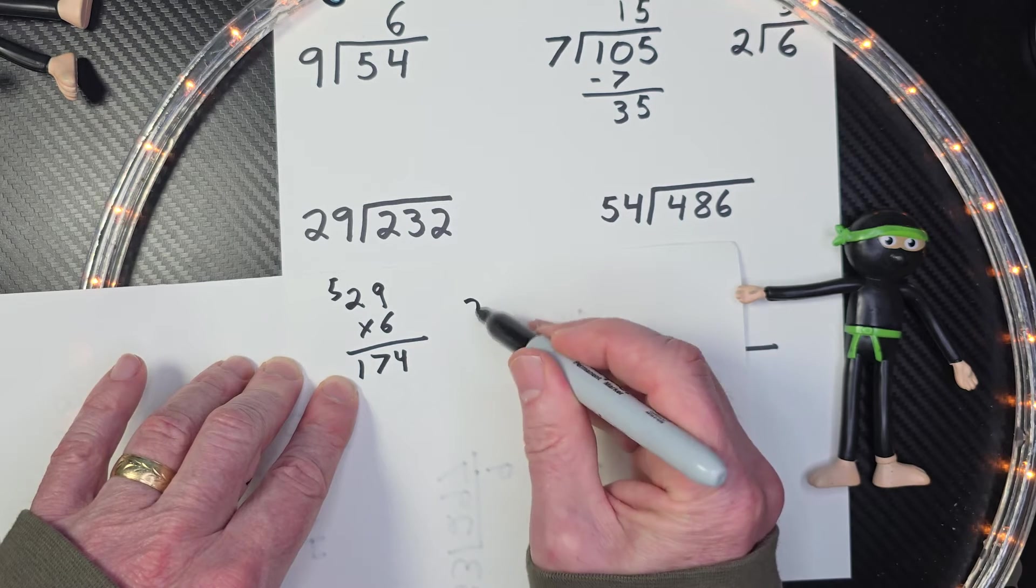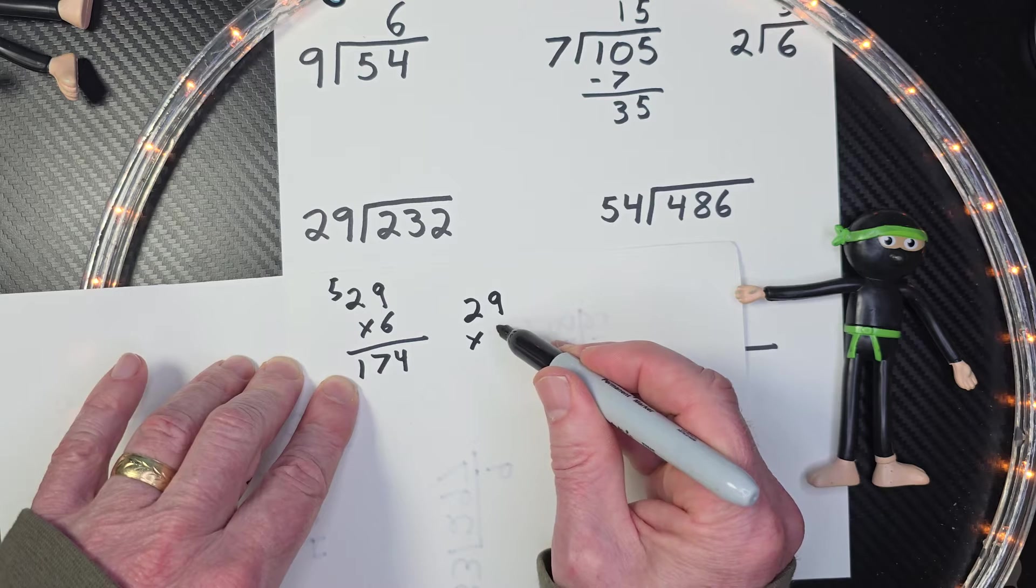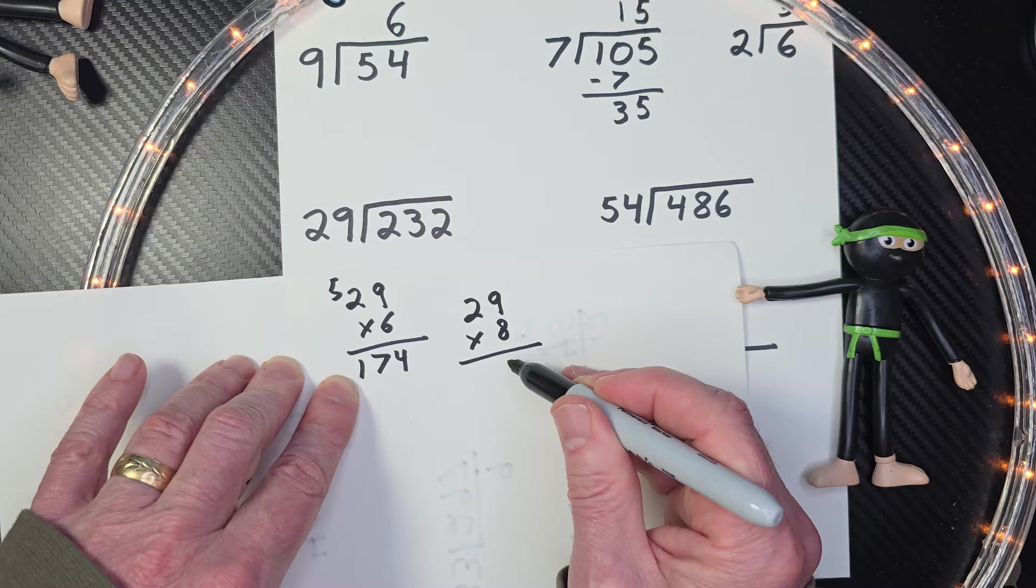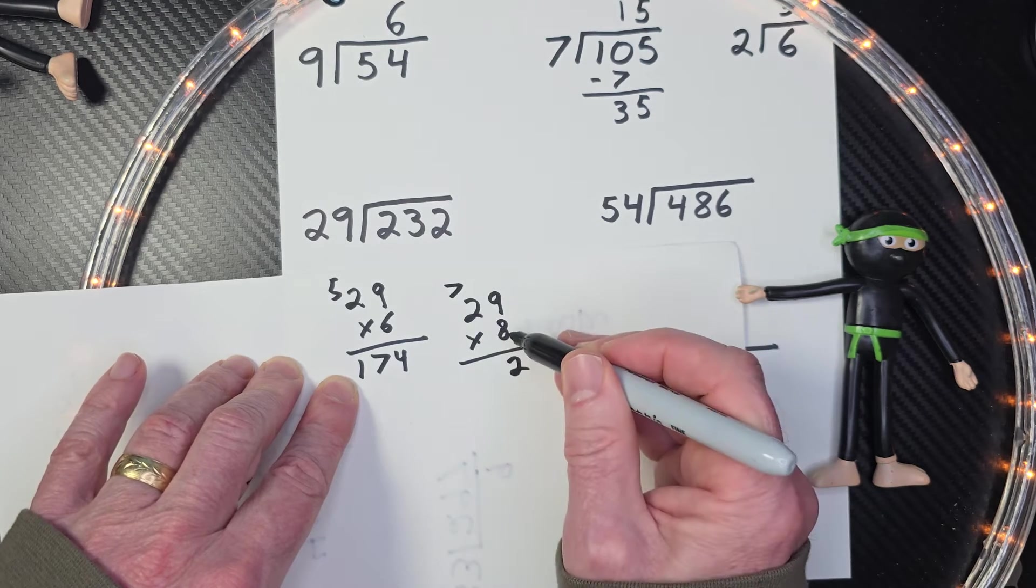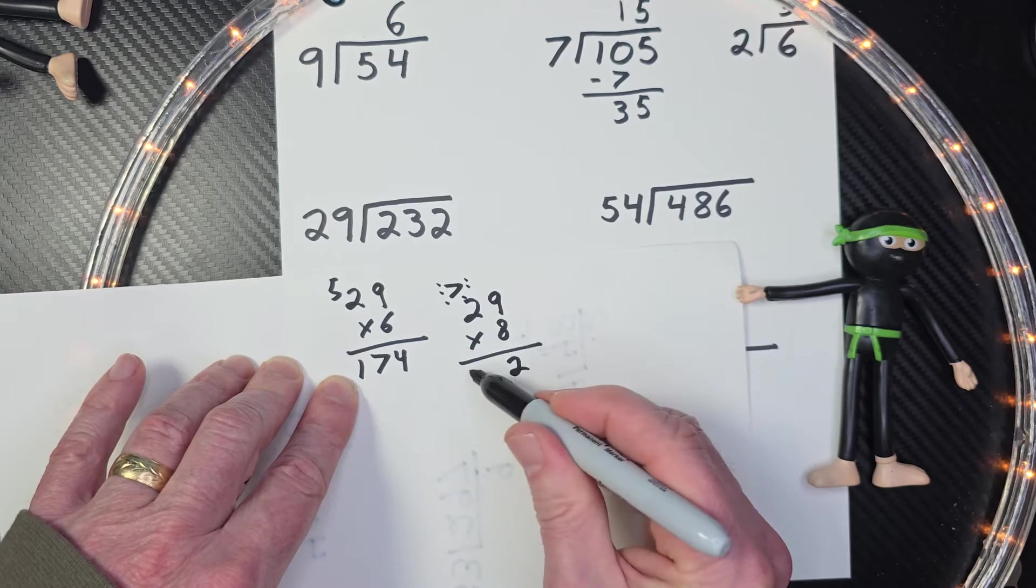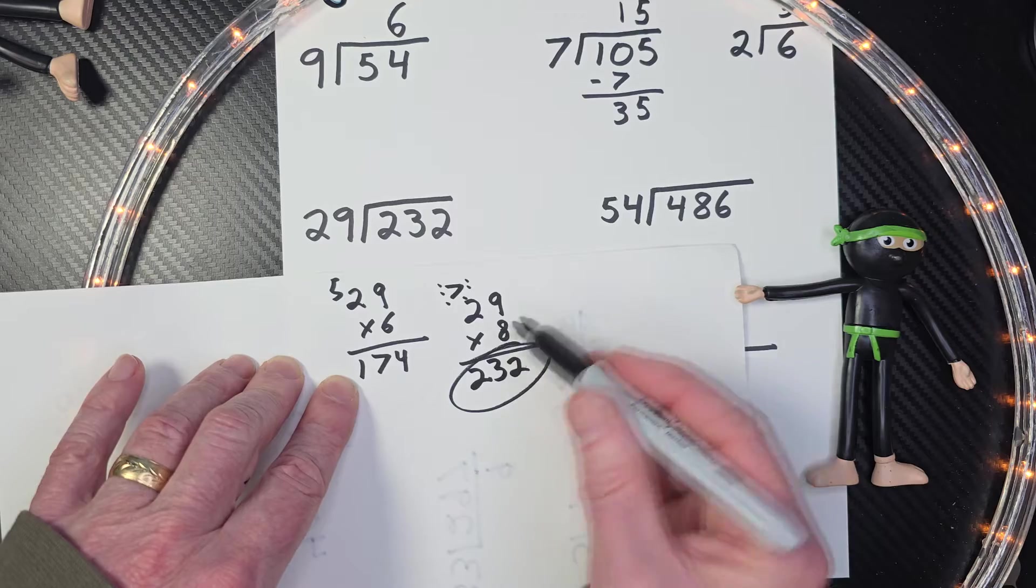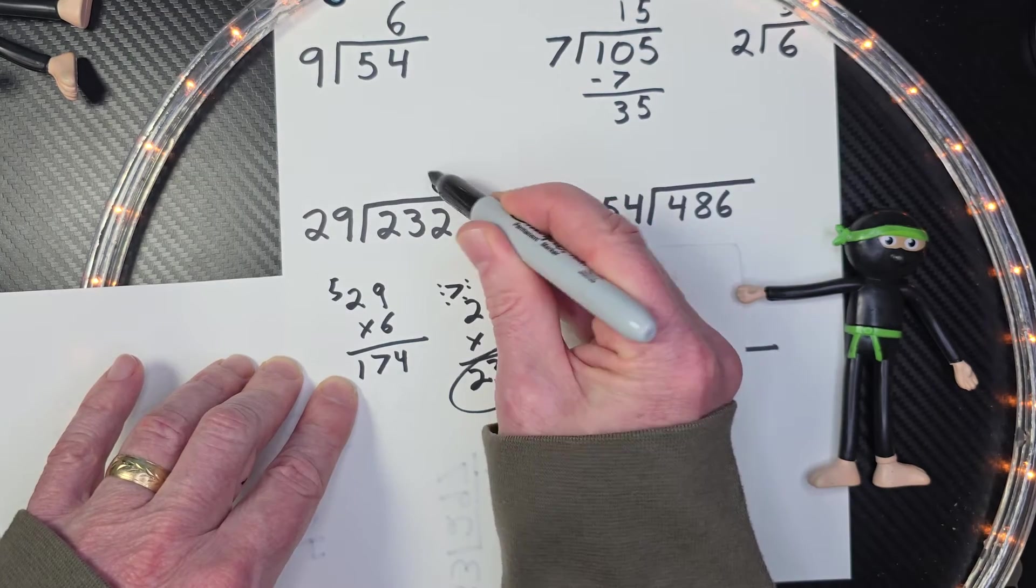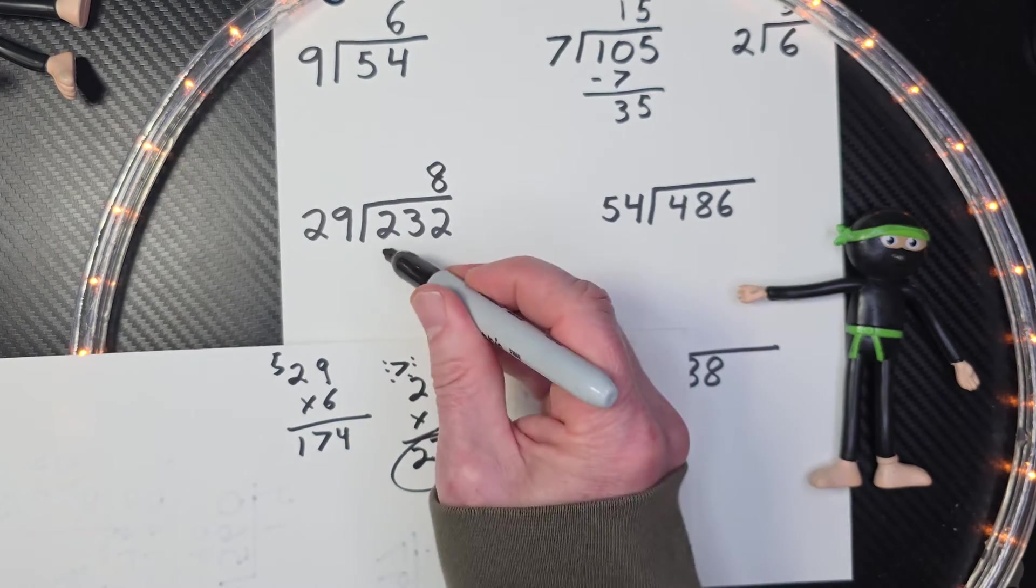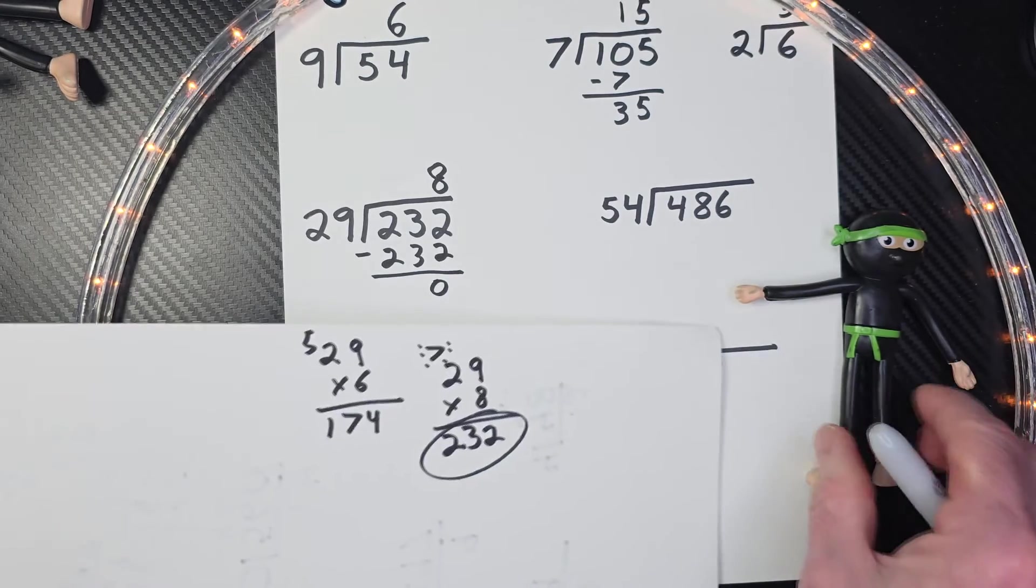So let's move that up a little bit. So I have 29 times, let's just go with eight. Nine times eight, 72. So I put the two here. Eight times two is 16, 17, 18, 19, 20, 21, 22, 23. Bingo. We got it. So the answer right here would be eight. So eight times 29, 232 with no remainder. Next problem.